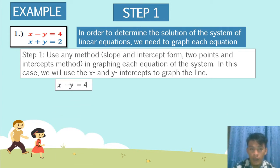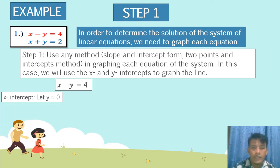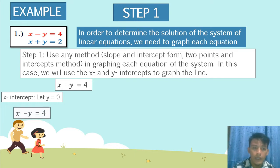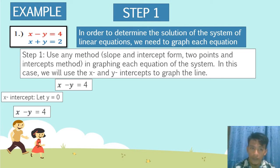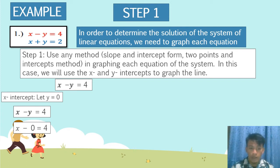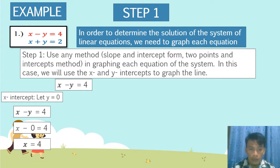For x minus y is equal to 4, to get the x-intercept, we let y equal to 0. Substituting: x minus 0 is equal to 4. Simplifying, x is equal to 4.